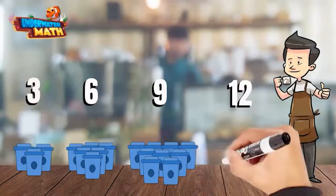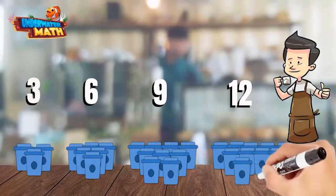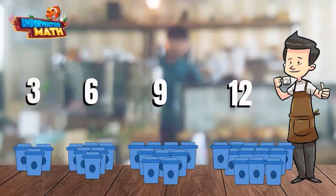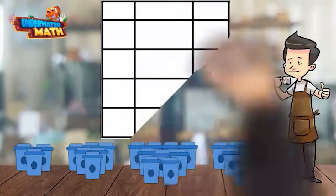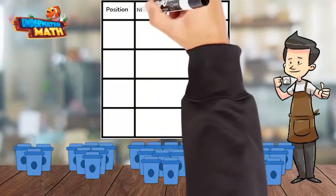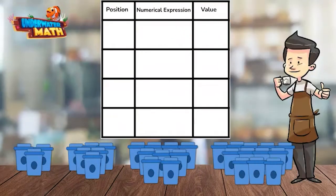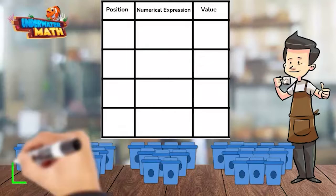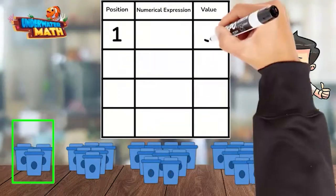We can see our pattern goes 3, 6, 9, 12 and can be represented in a table. This table has three columns: position, numerical expression, and value. Position represents the position of the number in the pattern. At position one we have three coffees, at position two we have six, position three has nine, and position four has twelve.